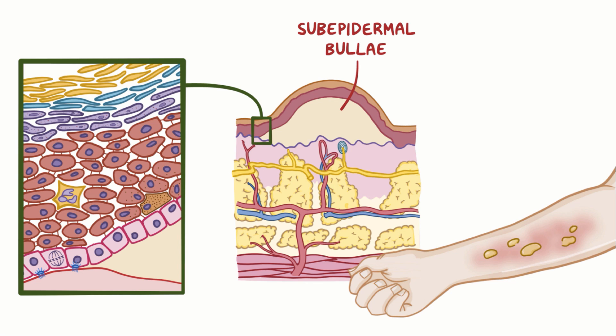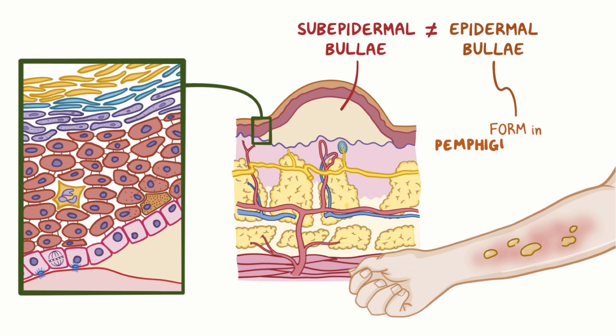These subepidermal bullae are distinct from the epidermal bullae which form in the disease pemphigus vulgaris. In pemphigus vulgaris, the bullae form as a result of breaking connections between cells within the epidermis. In bullous pemphigoid, the inflammation also affects the melanocytes, which produce more melanin that gets stuck within the cells of the dermis.